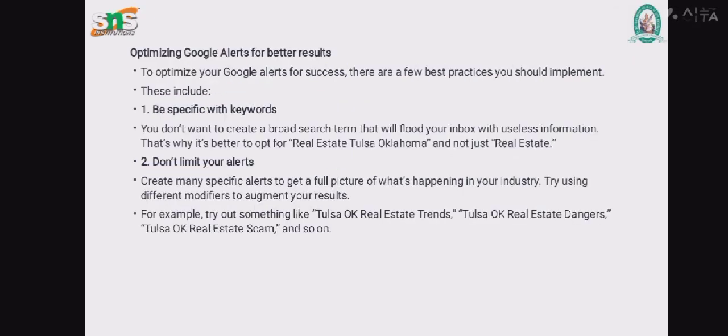Optimizing Google Alerts for better results. To optimize your Google Alerts for success, there are a few best practices you should implement. These include: be specific with keywords. You don't want to create a broad search term that will flood your inbox with useless information. It is better to use specific options — for example, "Real Estate Tulsa Oklahoma" rather than just "Real Estate."